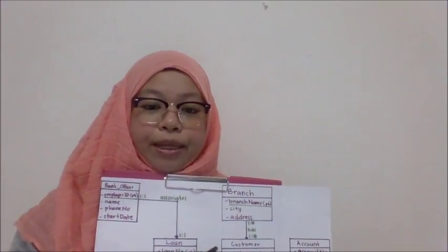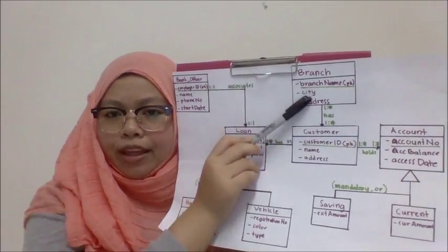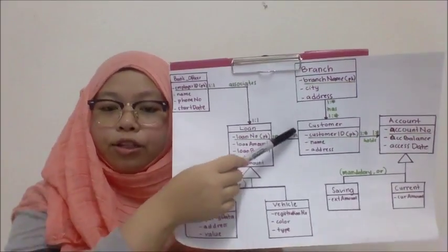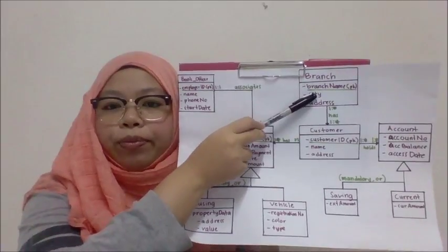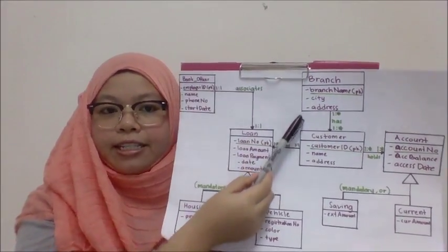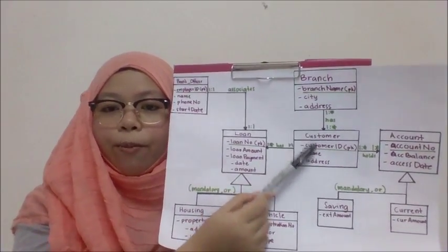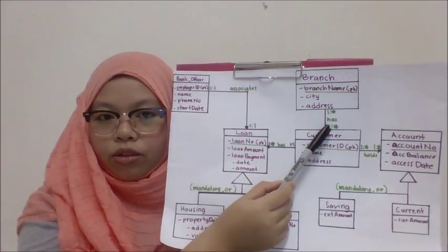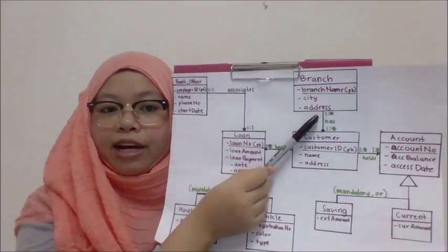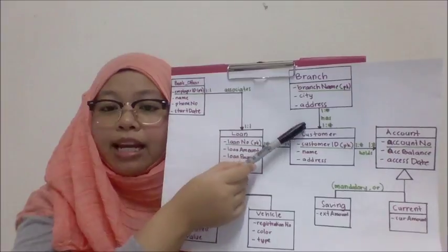Now we are going to explain the relationships between entities. The first is the relationship between the branch entity and the customer entity. The question has no specific mention of this relationship, so I am using common sense. For each branch, you can have one or many customers, and a customer can be associated with one or many branches. So this is a many-to-many relationship.